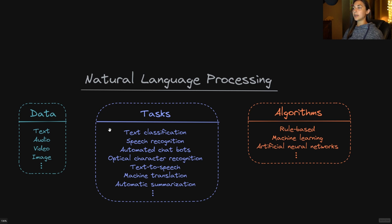The types of data used in these various tasks can also vary. The types of data within the field of NLP can be made up of text data, audio, video, or image data.